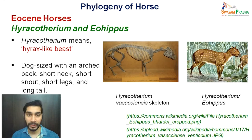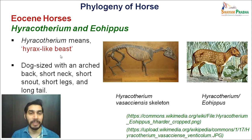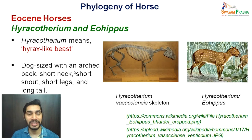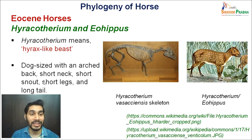Hyracotherium or Eohippus are the ones belonging to the Eocene horses. The word Hyracotherium comes from 'hyrax-like beast.' Hyrax is a mammal — a daisy-kind of thing. These small dog-like animals resemble the earliest known fossils of Hyracotherium. They had an arched back, a short neck, and the fossil suggests these organisms used to have a very short neck. The snout was also very short.